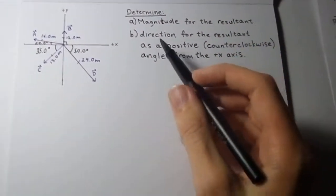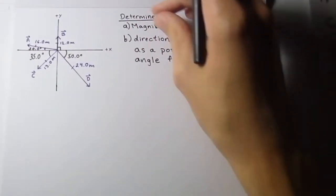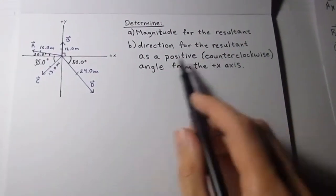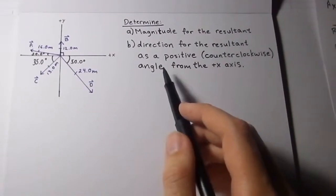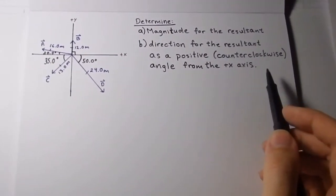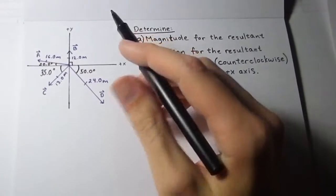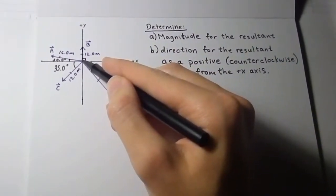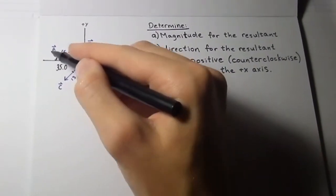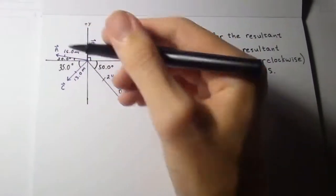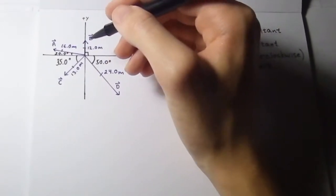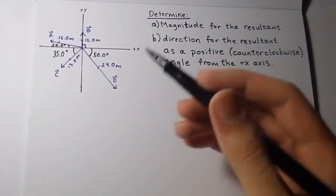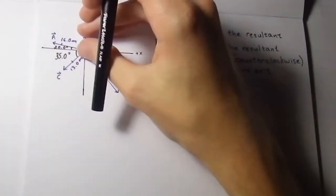So let's get started. First we need to determine the magnitude for the resultant and then the direction for the resultant as a positive counterclockwise angle from the positive x-axis. We have four vectors and before we begin adding them, we have to slide them over so that the tail of the second is at the head of the first. It's also called the head-to-tail fashion or head-to-foot, depending on what your professor tells you.